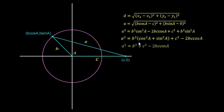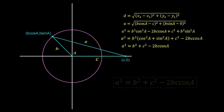Taking out b² from the cos² A and sin² A terms gives b²(cos² A + sin² A). This is a Pythagorean identity equal to one, so it cancels, leaving us with a² = b² + c² − 2bc cos A. This is the cosine rule.